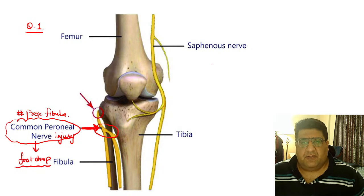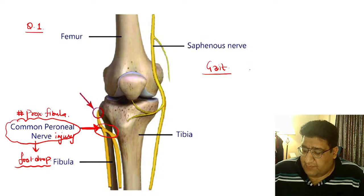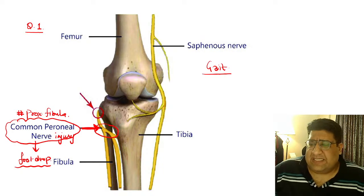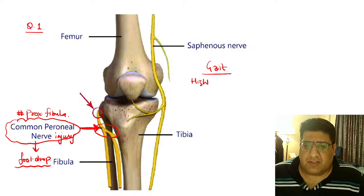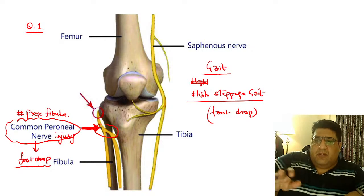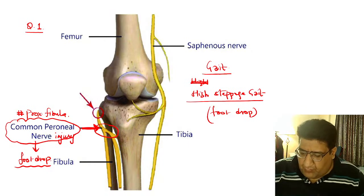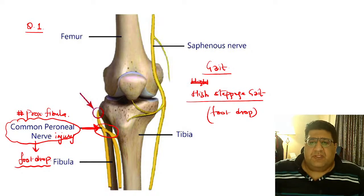Foot drop will give you what kind of gait? There were four options — high steppage gait, scissoring gait, Trendelenburg gait, and antalgic gait. We will remember the answer as high steppage gait. If you have a foot drop, to avoid that drop you will have a high steppage gait. This was the first question, something which has been asked in the past as well.